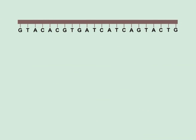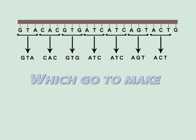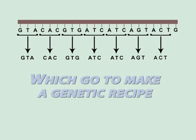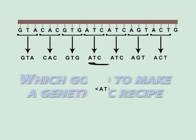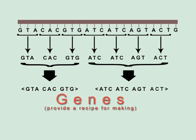The letters can be put into groups of three, which go to make a genetic recipe. Cells can use this recipe written down in genes to decipher how to make all of our proteins.